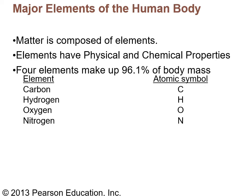If we're talking about the human body, there are four elements that make up about 96 percent of the body's mass: carbon (symbol C), hydrogen (H), oxygen (O), and nitrogen (N). These four make up most of the substances you find in the human body — primarily what you'd find in proteins, carbohydrates, fats — and they make up the backbone of nucleic acids.